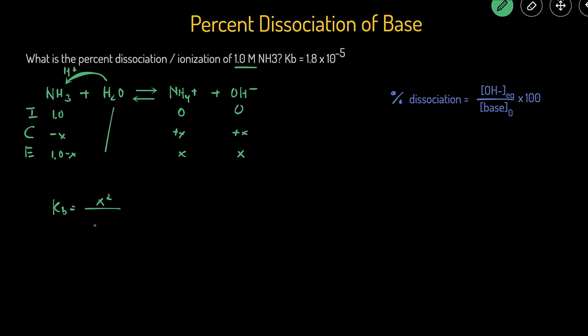And then the bottom is 1.0 minus x. So that's the concentration of the NH3. That's going to equal the Kb value, which we're given is equal to 1.8 times 10 to the negative 5.